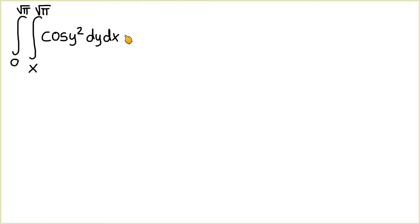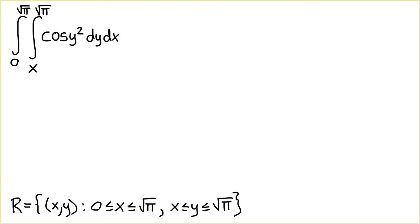When we examine the bounds of integration on this double integral, observe that y ranges from x to square root of pi and x ranges from 0 to square root of pi. Therefore the region of integration R equals the set of all (x, y) such that 0 ≤ x ≤ √π and x ≤ y ≤ √π.